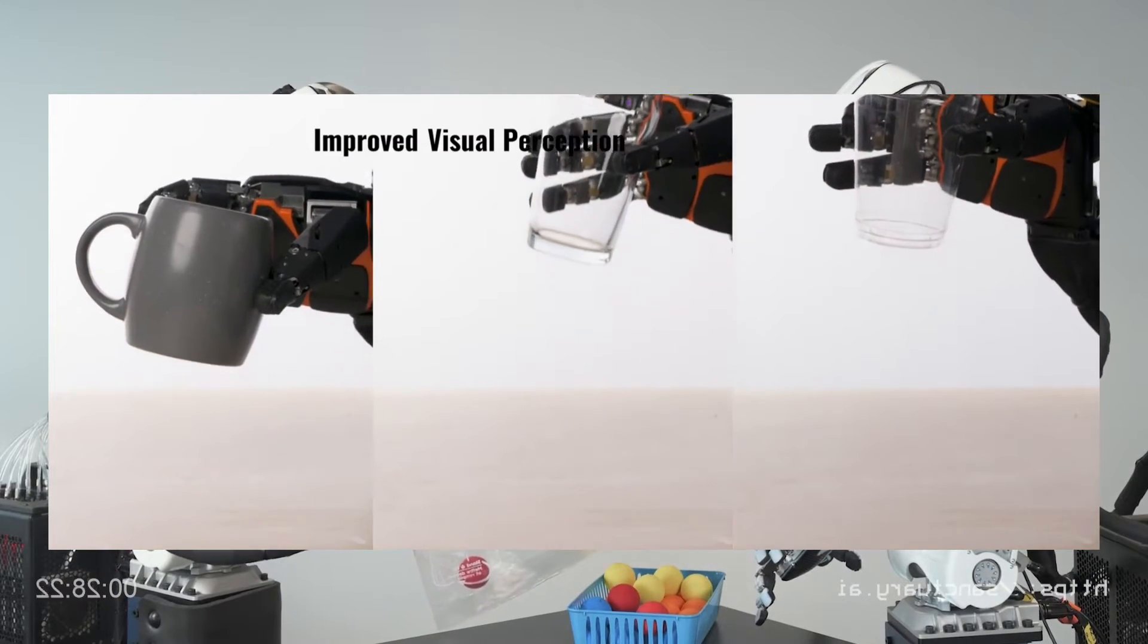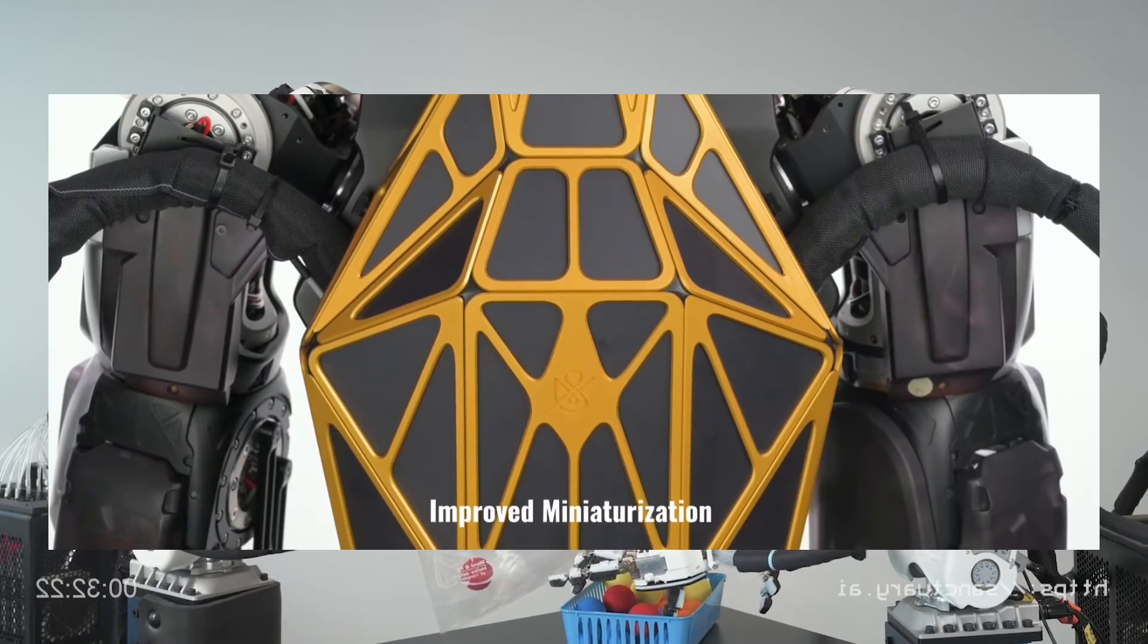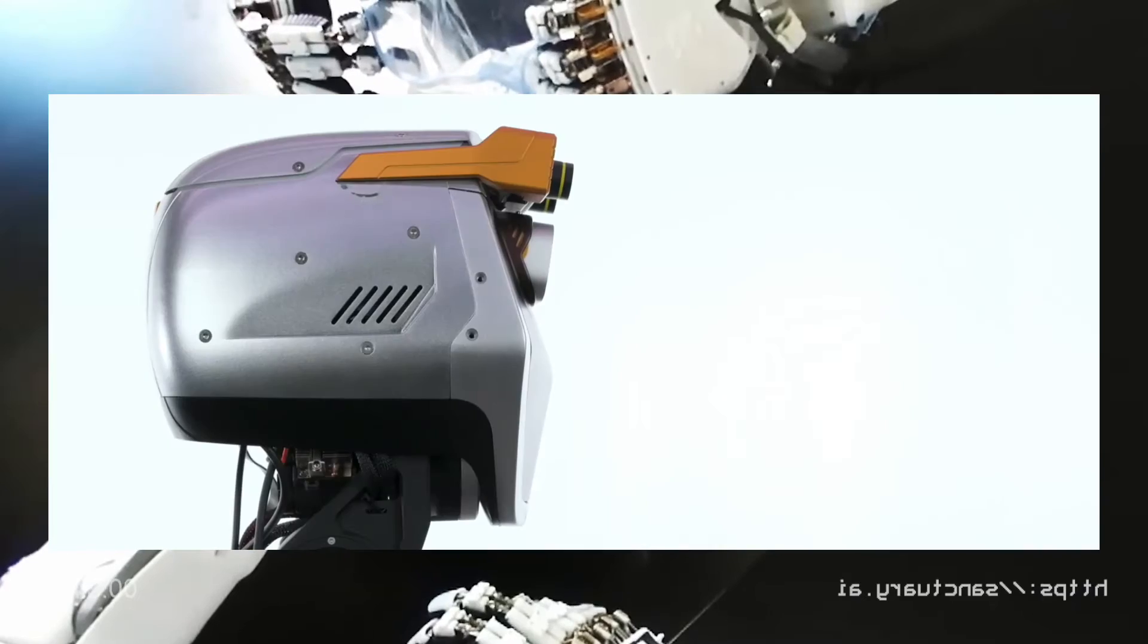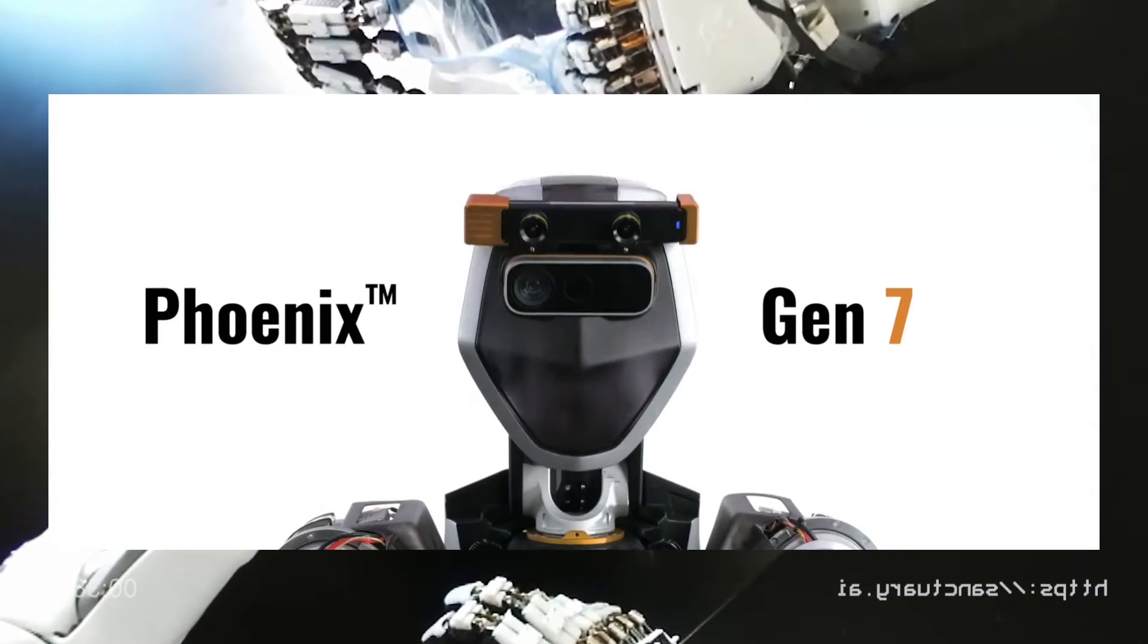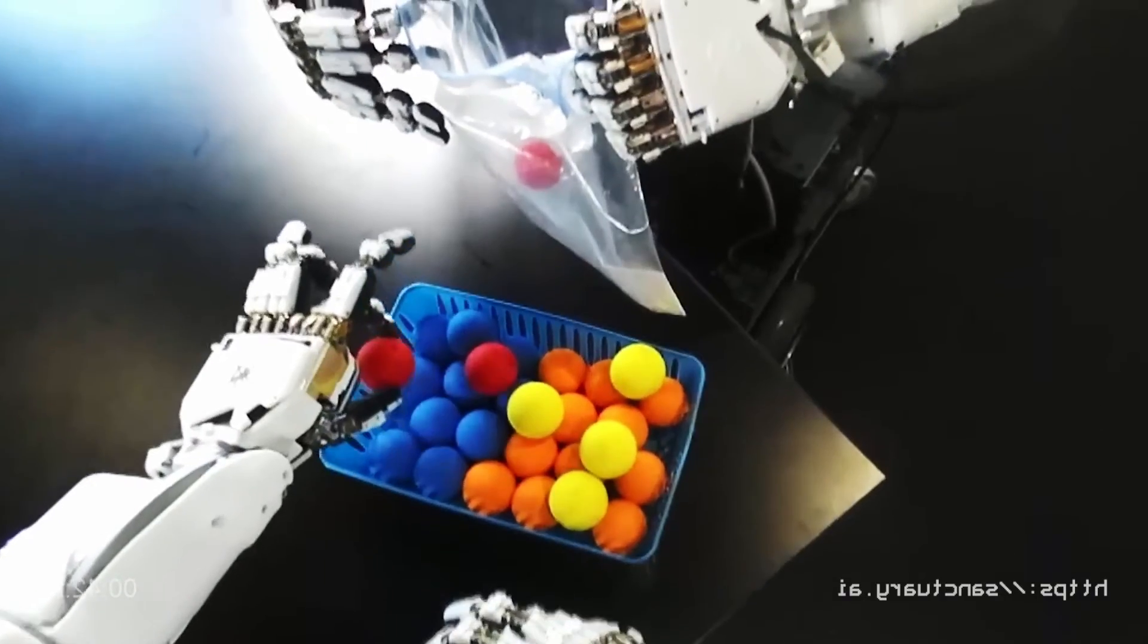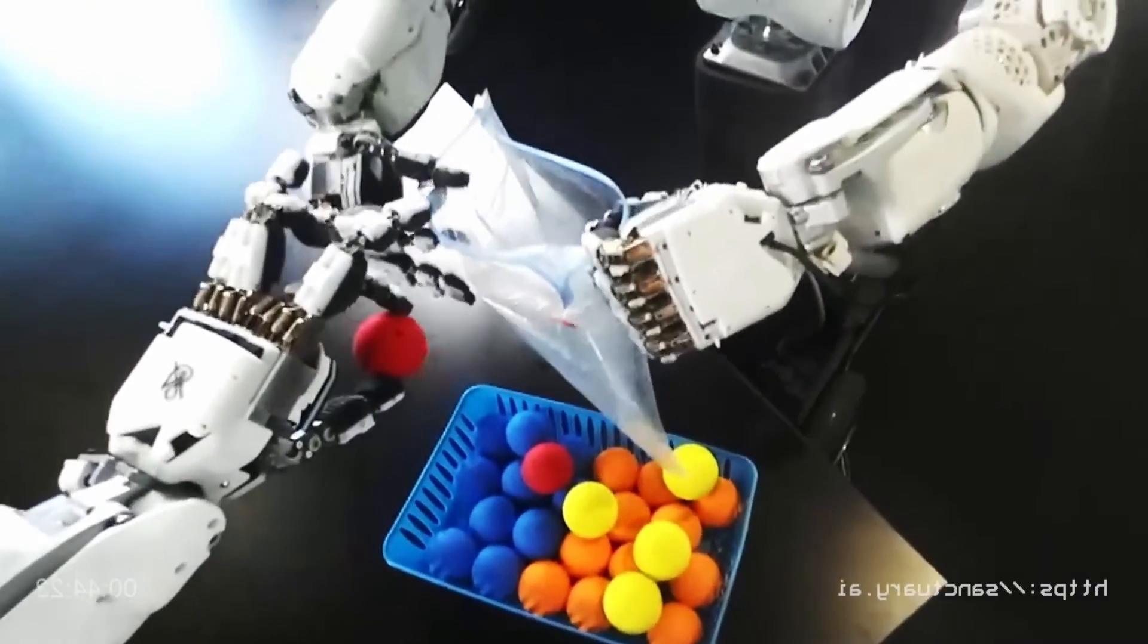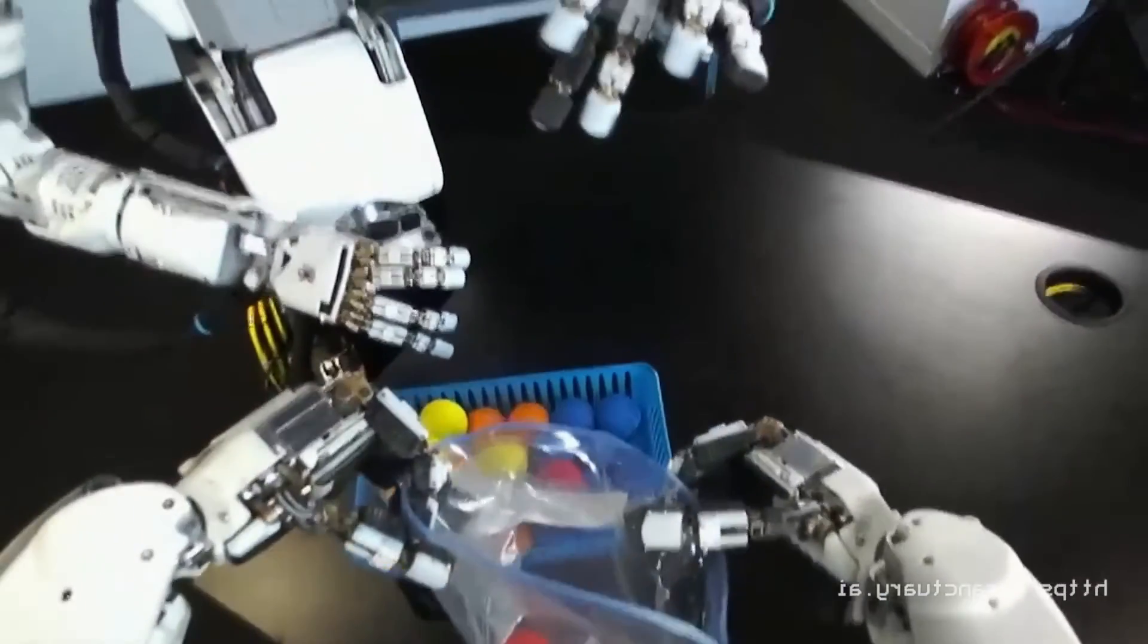The improvements in Phoenix 7 go beyond just its learning capabilities. This new generation boasts increased uptime, meaning it can work for longer stretches without needing maintenance. It also has a wider range of motion in its arms and wrists, allowing for more intricate tasks. Additionally, Sanctuary has managed to make the robot lighter and cheaper to produce, opening doors for wider adoption.